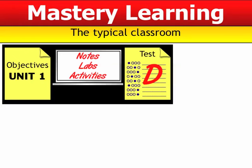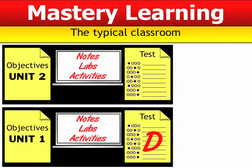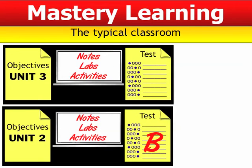Let's say the student gets a D. Then the second unit begins. Same idea: objectives, labs, notes, activities, all those things in between, and they take a test — this time they get a B. So now they're averaging between a B and a D.